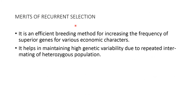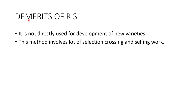Merits of recurrent selection: it is an efficient breeding method for increasing the frequency of superior genes for various economic characters. It helps in maintaining high genetic variability due to repeated intermating of heterozygous populations. Demerits: it is not directly used for the development of new varieties, and this method involves a lot of selection, crossing, and selfing work.